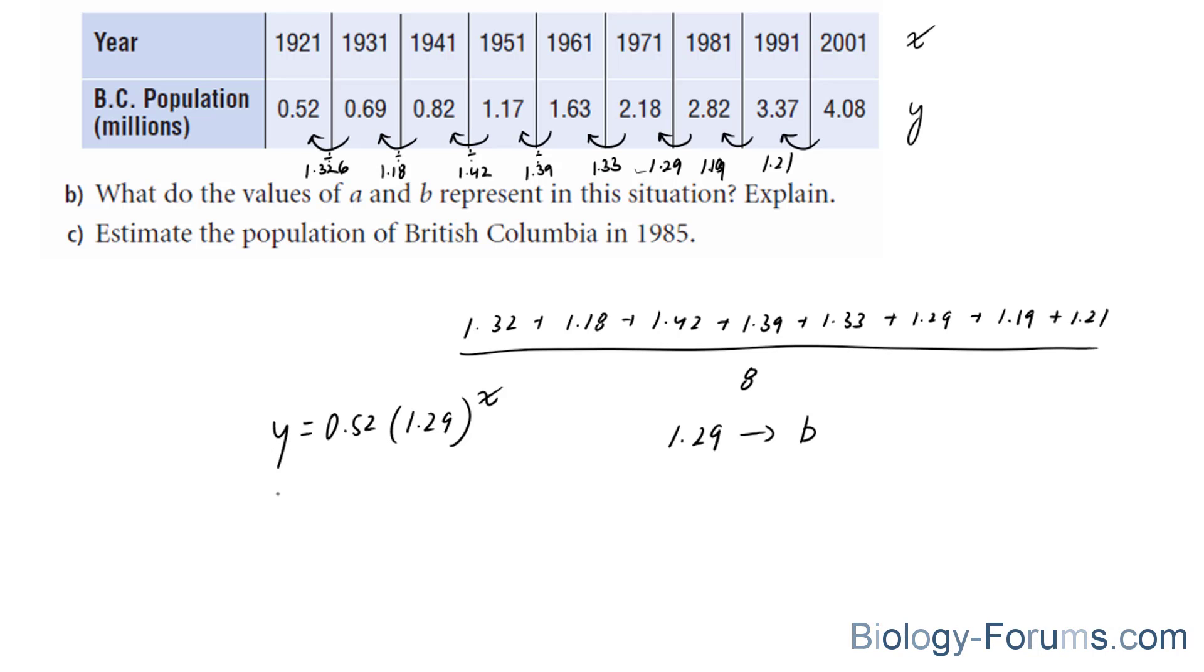Do not be tempted to put 1985 into your x. Instead, what you should do is take 1985, which is our target year, and subtract it from the starting year, 1921.